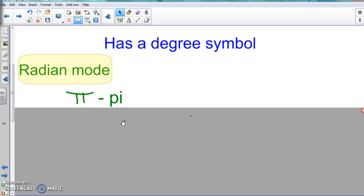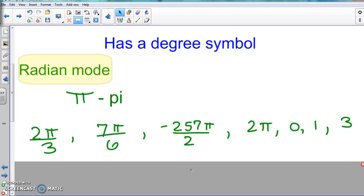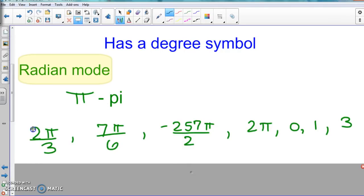And so with the radian mode, 9 times out of 10, not 100% of the time, but 9 times out of 10, we'll have pi in it. So here's some examples of a radian.